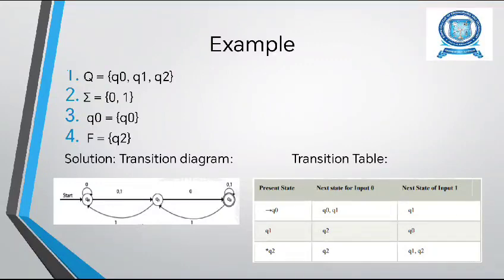Example: Q is equal to Q0, Q1, Q2. Sigma is equal to 0, 1. Q0 equal to Q0. F is equal to Q2. Using this information, we have to draw the transition diagram as well as transition table. First we are going to see the transition diagram. How many states are they having? Only Q0, Q1, Q2. Three states are there. Likewise we have to draw Q0, Q1, Q2 within the circle symbol. And next we have to see what are the inputs we have to give: 0 as well as 1. Likewise we have to give the input for everything.